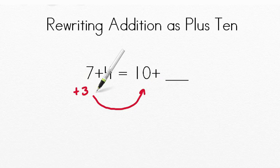So remember, if we added those to get the 10, we have to take away that same number from here. So minus 3. So 4 minus 3 is 1. So 10 plus 1 equals 11. And 7 plus 4, if you count on, is also 11. Nice work.